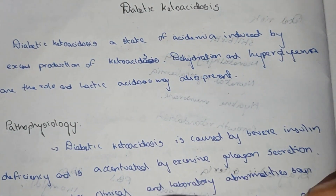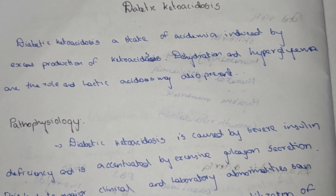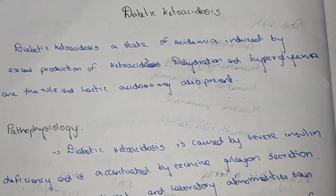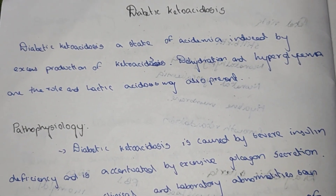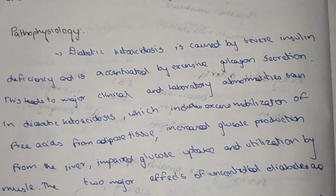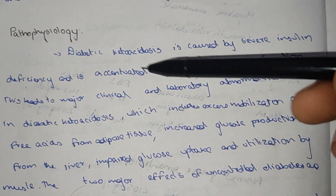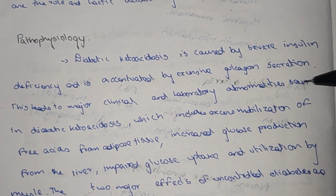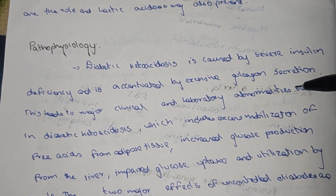Diabetic ketoacidosis is caused by severe insulin deficiency, alternated by excessive glucagon. This leads to excess production of ketoacids. Dehydration and hyperglycemia are also present in the pathophysiology of diabetic ketoacidosis.